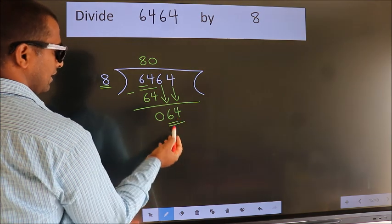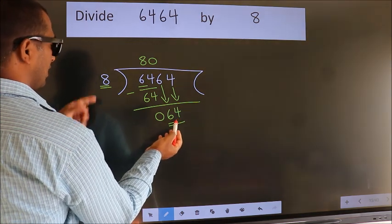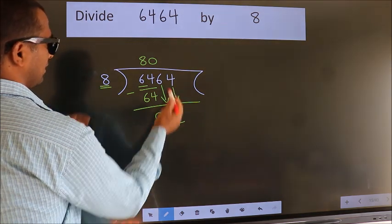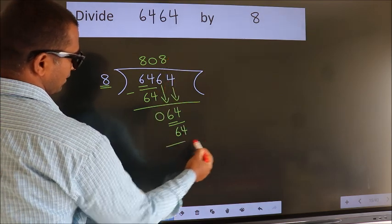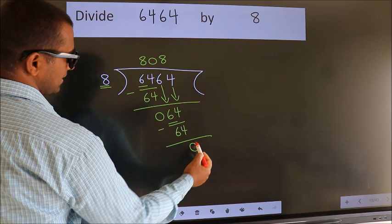So, 64. When do we get 64? In the 8 table, 8 times 8 is 64. Now we subtract and get 0.